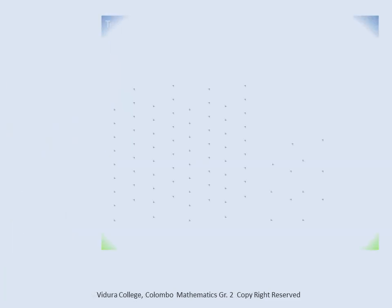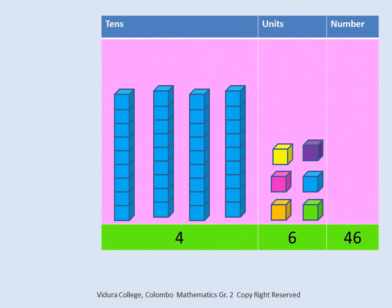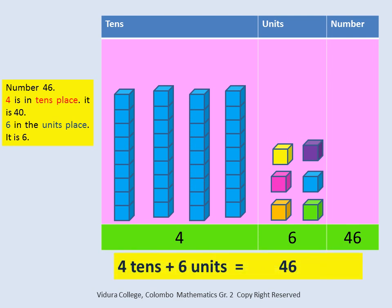Let's move to the next chart. Can you see there are four rods in tens place, six blocks in units place? Four is in tens place. It is forty. Six in the units place. It is six. Four tens and six units make forty-six.